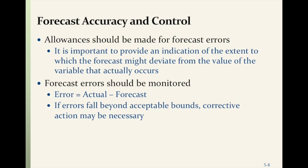Forecast accuracy and control: Allowances should be made for forecast errors. It's important to provide an indication of the extent to which the forecast might deviate from the value of the variable that actually occurs. Forecast errors should be monitored — the error is actual minus the forecast. If errors fall beyond acceptable bounds, corrective action may be necessary.